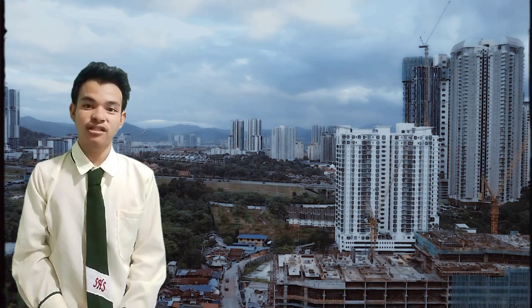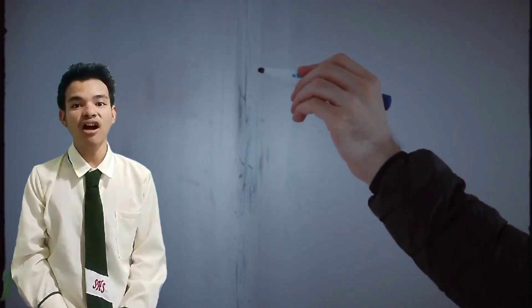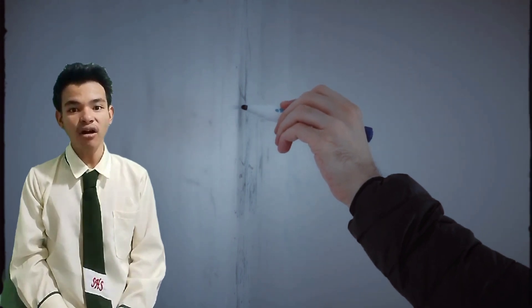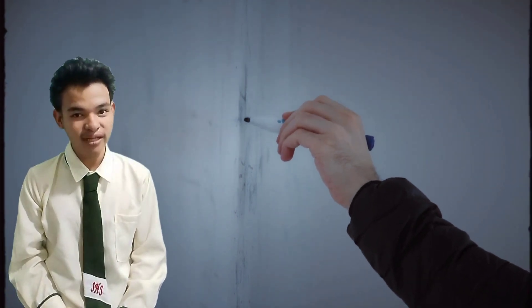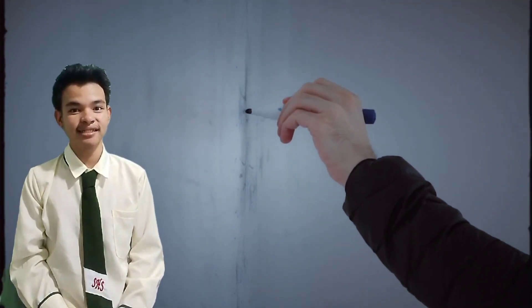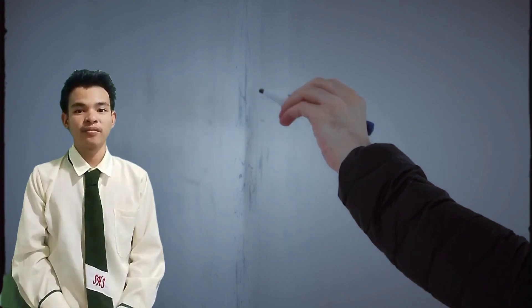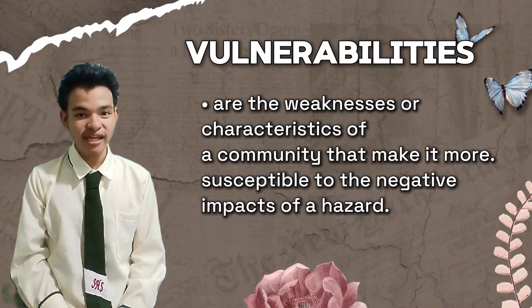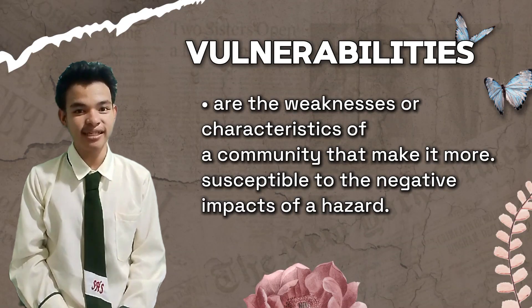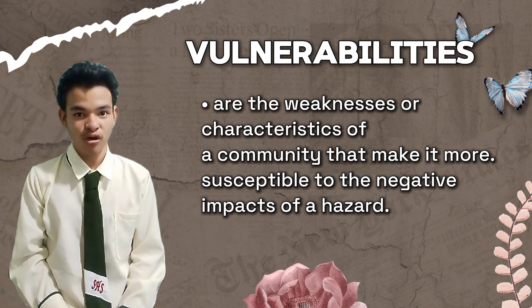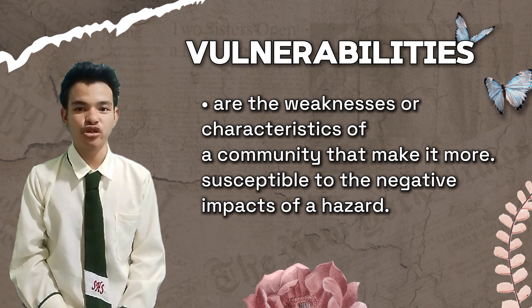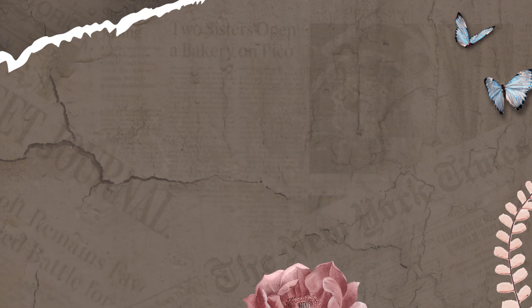For example, inadequate infrastructure, poor healthcare systems, poverty, and lack of access to education are all vulnerabilities that can exacerbate the impacts of a disaster. Identifying and addressing these vulnerabilities is crucial in building resilience within a community.